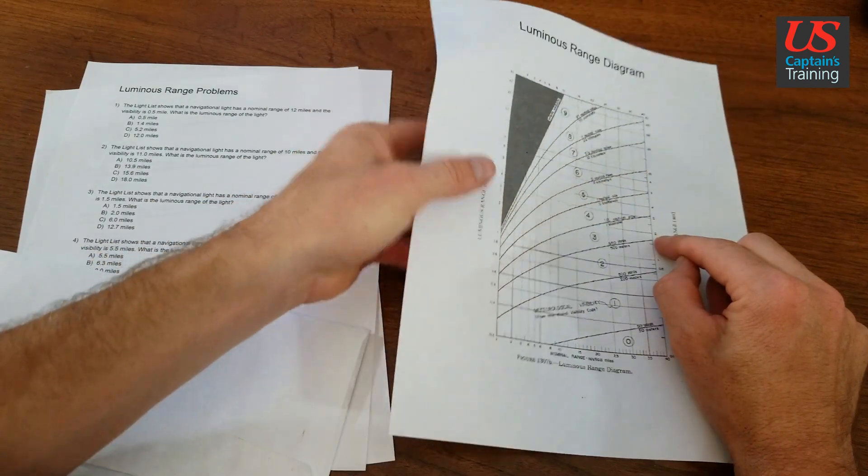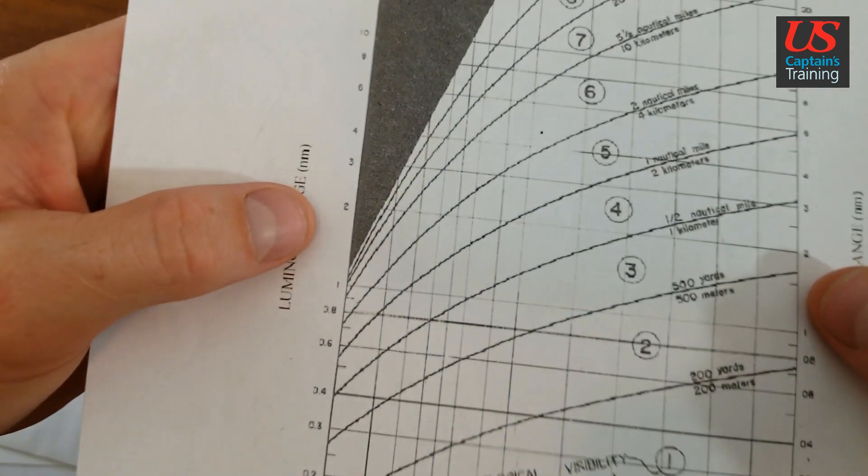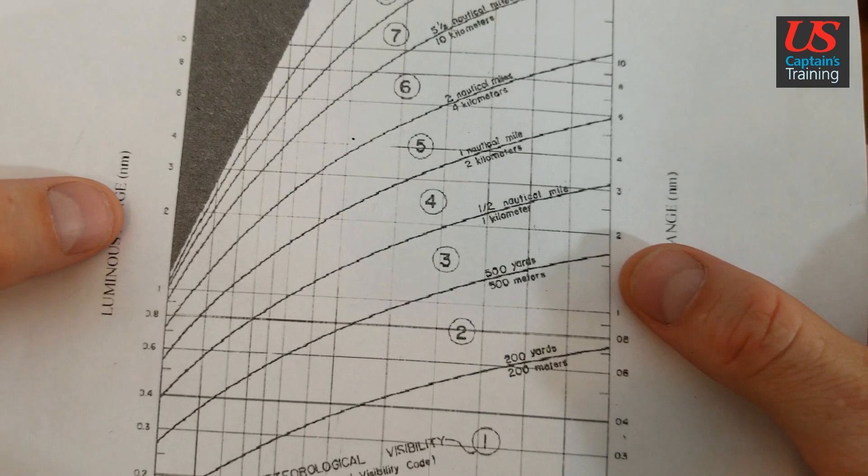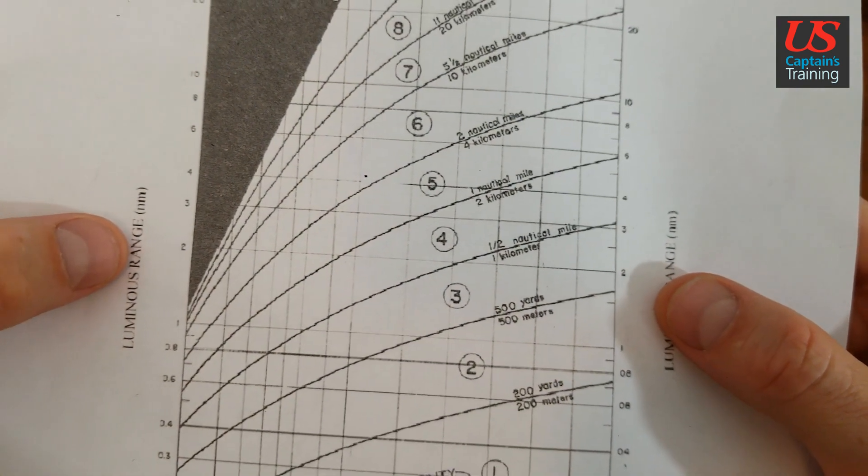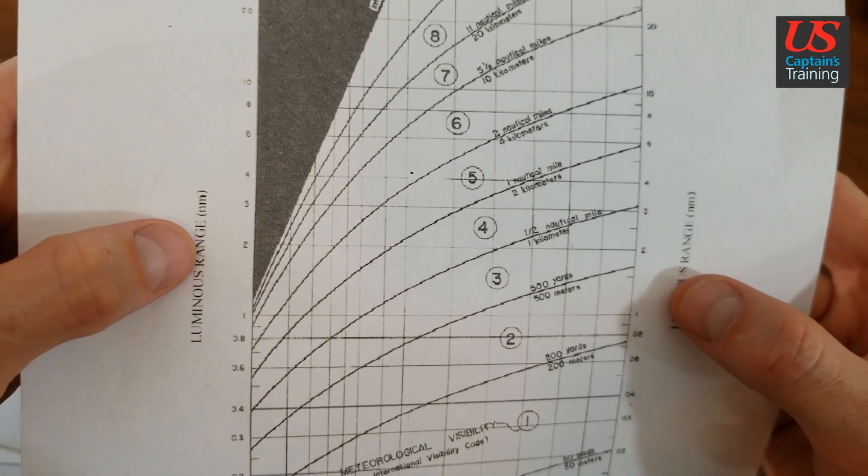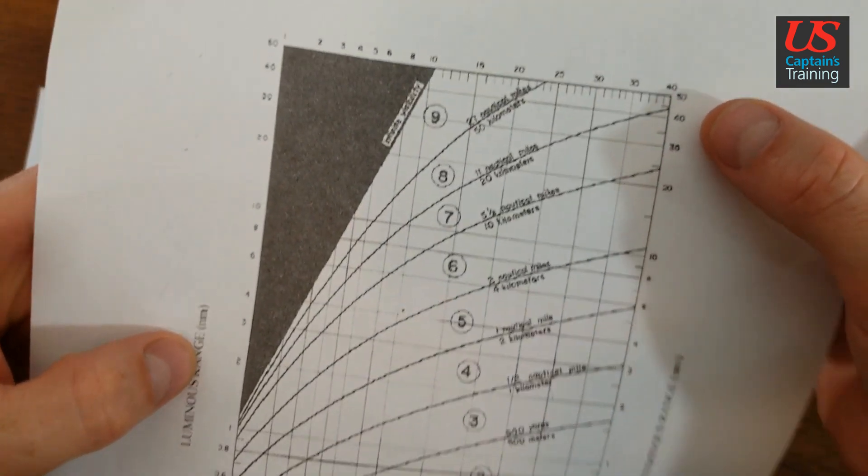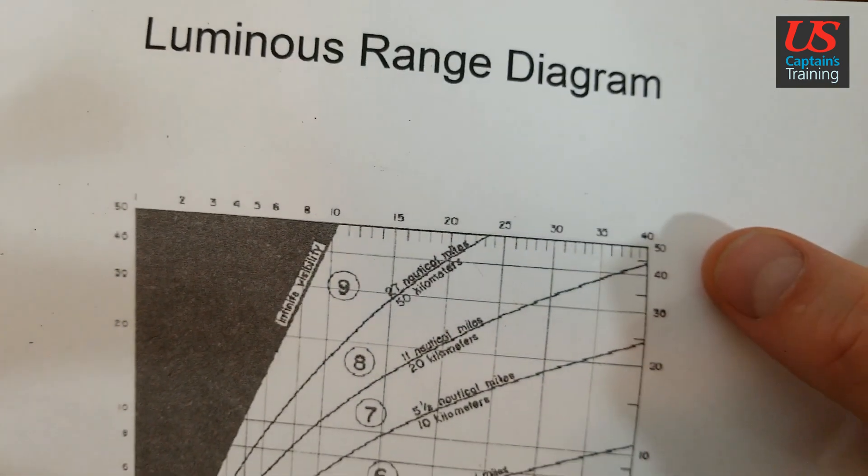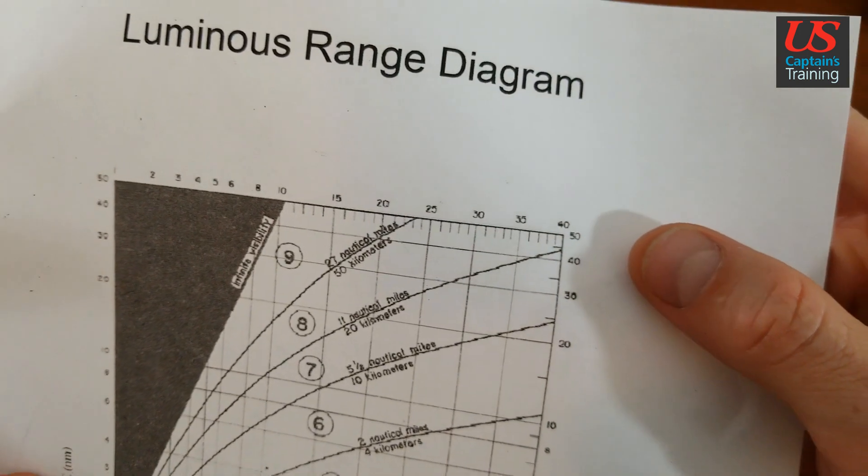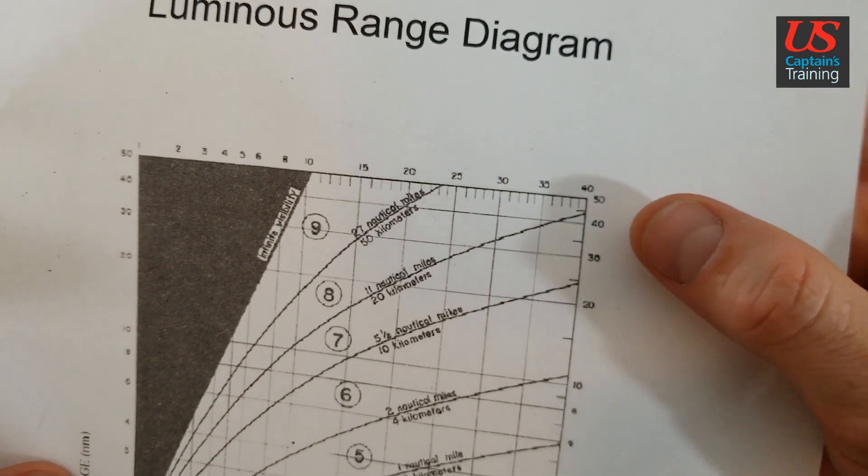And that is because it's a logarithmic scale. So it changes as it goes up. This distance between 50 and 40, that represents 10 units, and it's pretty small.